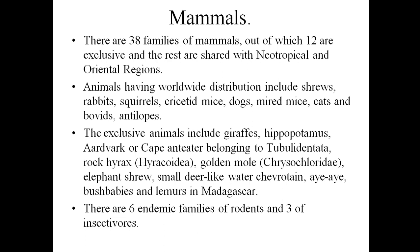Animals with worldwide distribution include shrews, rabbits, squirrels, mice, dogs, mice, cats, bobcats, and antelopes — these are all more generalized species with worldwide distribution. Shrews, rabbits, squirrels, cats, bobcats, and antelopes are found everywhere.